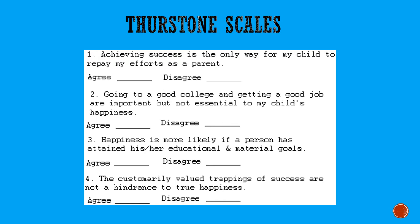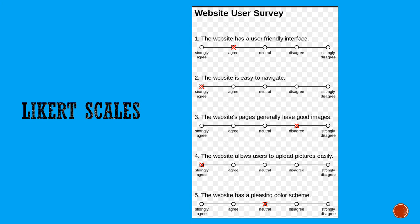Part of the problem with the Thurstone scale is that you're asking people to agree or disagree with statements, but you're not really getting a measure of the extent to which they agree or disagree. Somebody who really agrees strongly is lumped in with somebody who sort of kind of agrees, and you can't tell the difference between the two. That's where Likert scales were developed. You've all seen Likert scales — they're probably the most commonly used type of attitude measure. You're rating your agreement with a statement, but on a line, usually a five-point scale, ranging from strongly agree to strongly disagree.